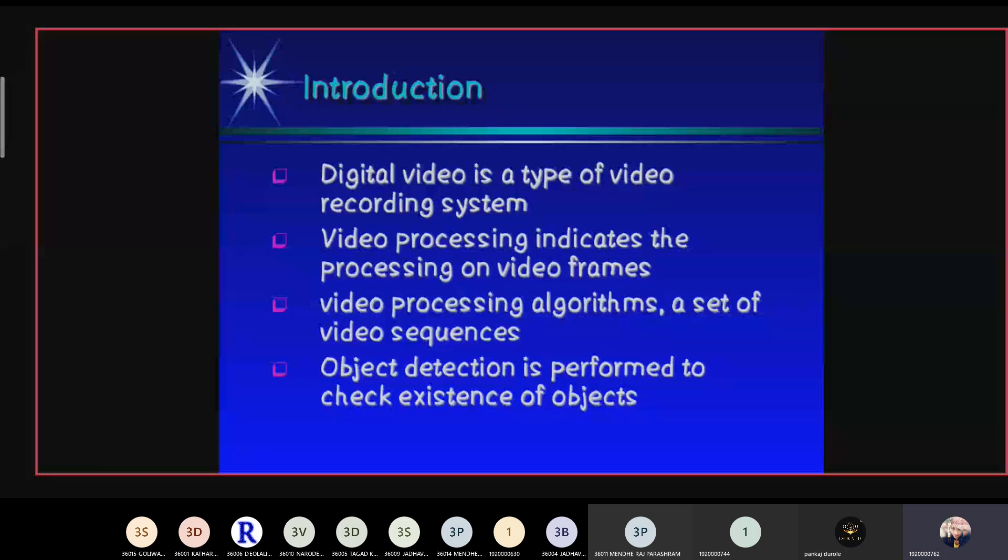Introduction: digital video is a type of video recording system that works by using a digital rather than an analog video signal. The terms camera, video camera, and camcorder are used interchangeably. Video processing indicates the processing on video frames which are taken as input and result in a set of related parameters based on image and video. Video processing algorithms: a set of video sequences is collected together and after that different steps are carried out like object identification, object segmentation, identifies region of interest, and motion detection. Object detection is performed to check existence of objects.